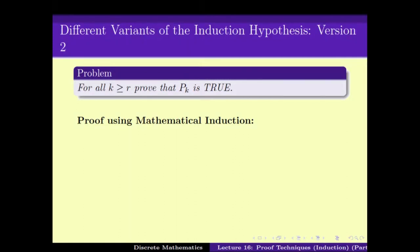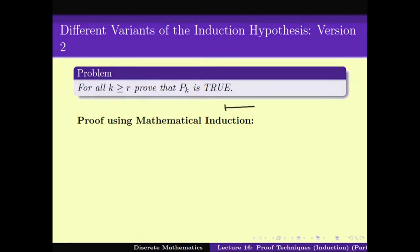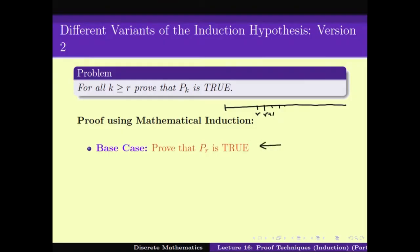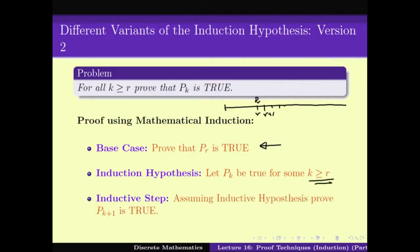Thus, to prove a statement of this form — for all k ≥ 1, Pk is true — there are three parts. First, there is a base case where you prove P1 is true. Second is the induction hypothesis, where you assume that Pk is true for some k ≥ 1. And finally, assuming the induction hypothesis, you prove Pk+1 is true. We saw a couple of examples in the last videos on how to use mathematical induction to solve problems.